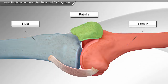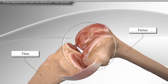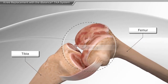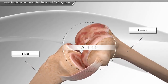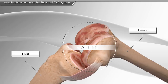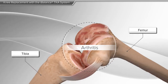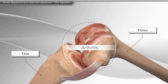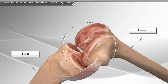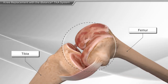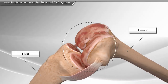In knee arthritis, the cartilage on the end of the bones slowly wears away, causing pain and irritation, making daily activities difficult. Arthritis can affect all or just one area of the knee. In this case, the entire knee is affected and a total knee replacement is performed.